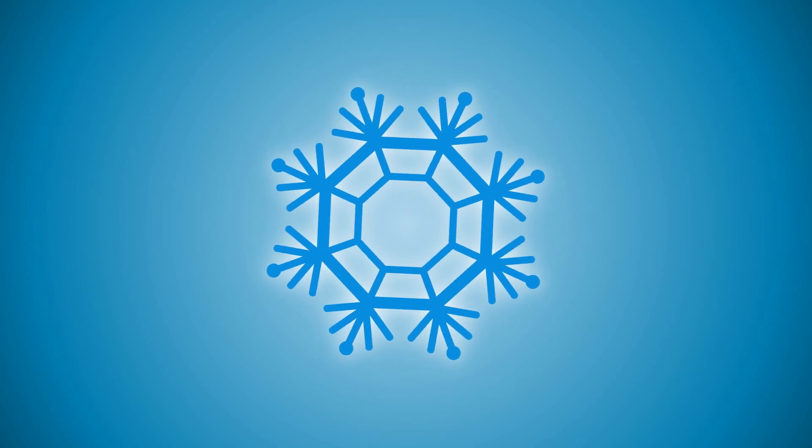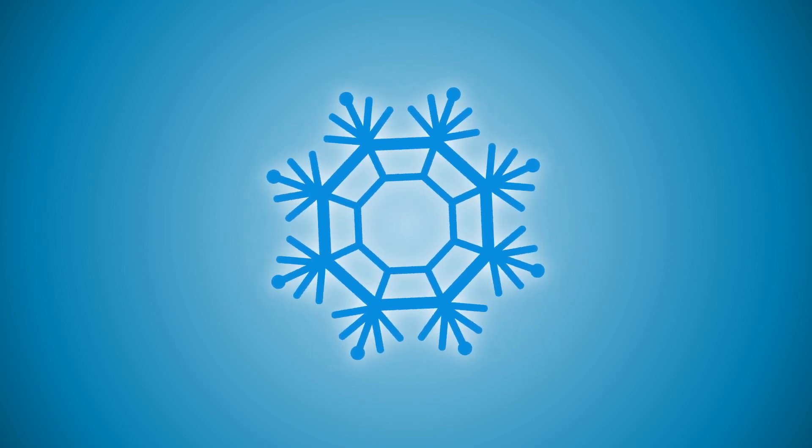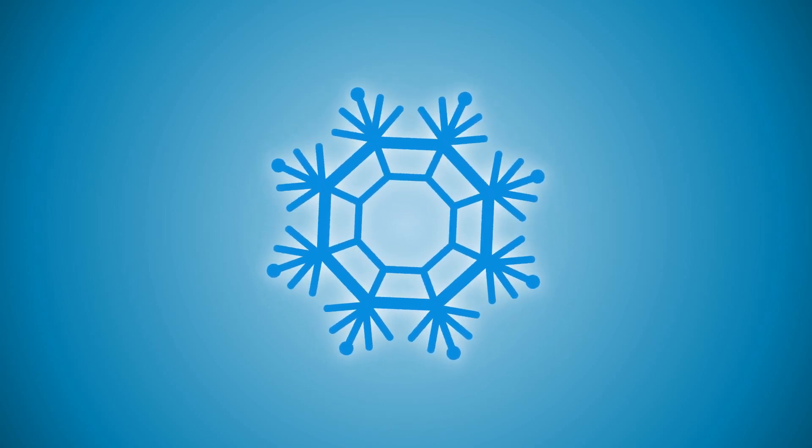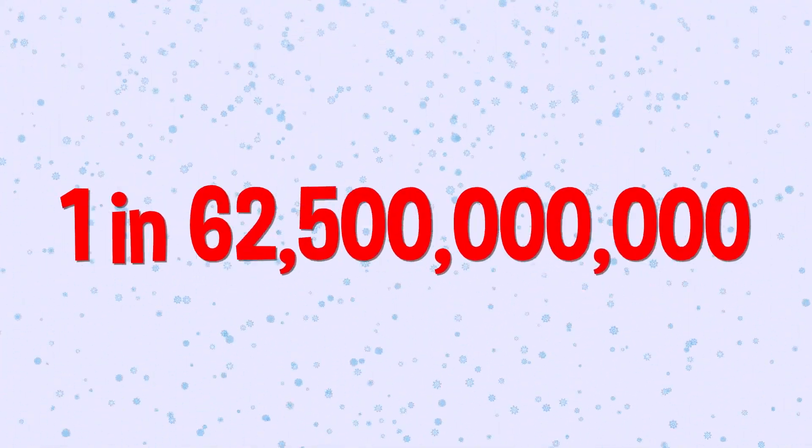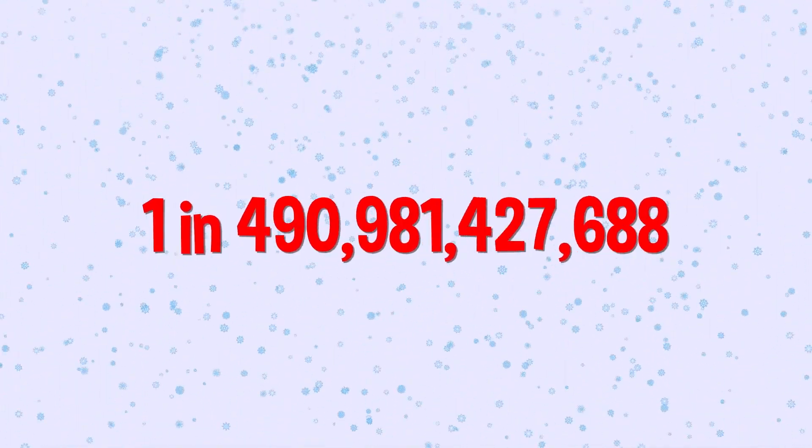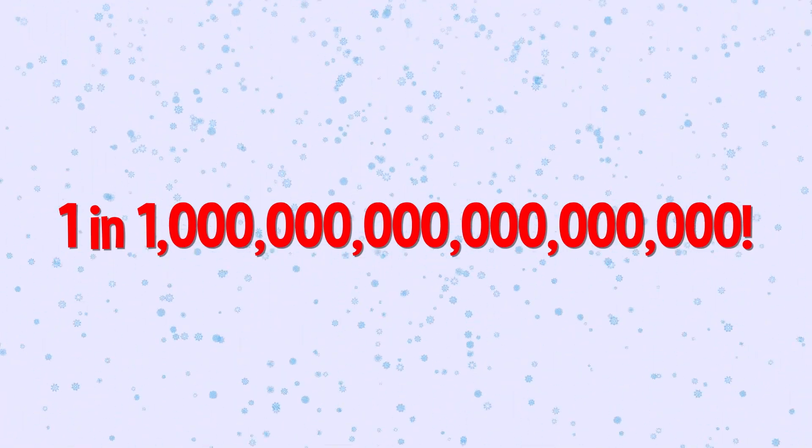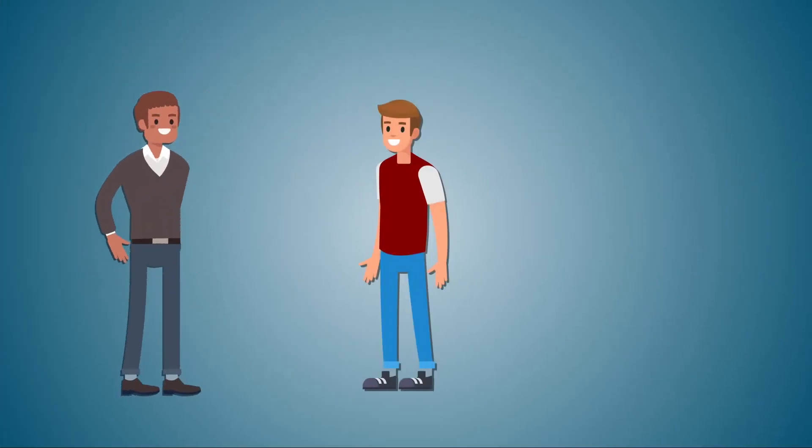Lots of people say that every single snowflake has its own unique pattern, but that's not actually exactly true. It's just that the chances of finding two identical twin snowflakes is very, very, very rare. Your chances are about one in one million trillion. That's a one followed by 18 zeros.